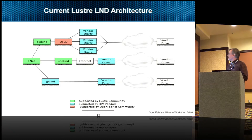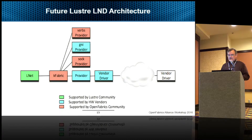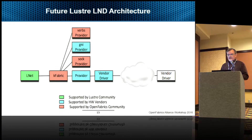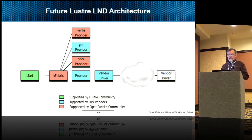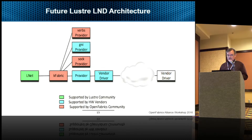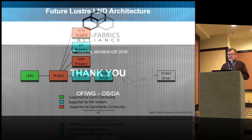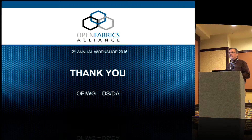Going back to the original picture: this is what Lustre looks like today with LNet having to have its own network abstraction layer inside. And then this is what we see the future as — KFabric would provide that network abstraction and LNet is just written to KFabric. Once that part is done, there would not be a need for them to continue adding new support within LNet for a new provider; that would be handled by the KFabric interface.